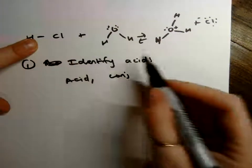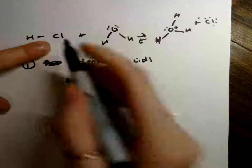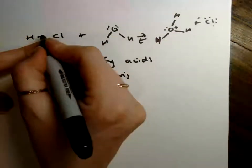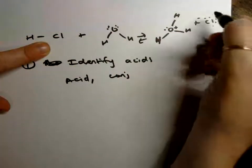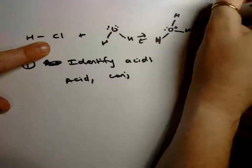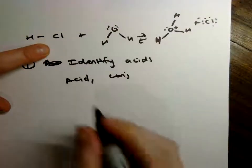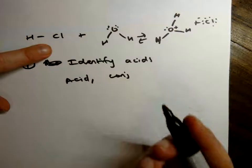So if it's donating or able to donate a proton, then that's going to be the acid. And the other way you can check is if you already have the reaction written out like this, this goes from HCl to Cl. So it's lost the hydrogen, but the lone pair stayed behind. I forgot to draw that last lone pair there. So that indicates that this has donated a proton to something else.